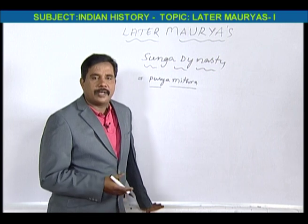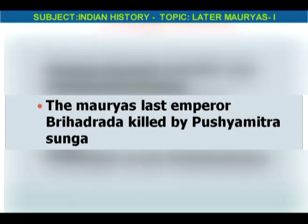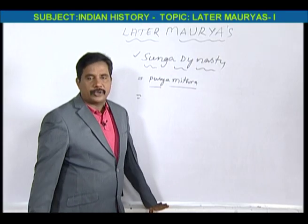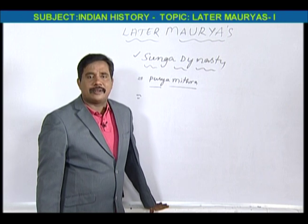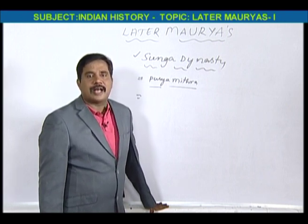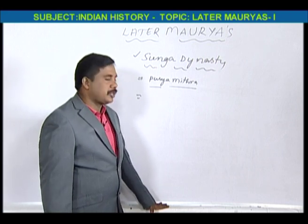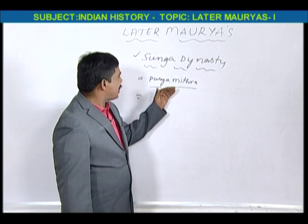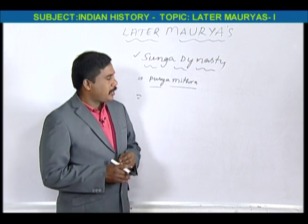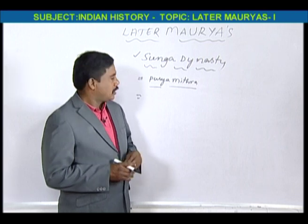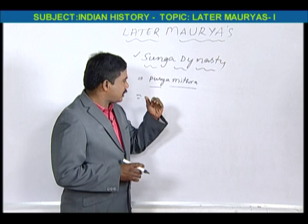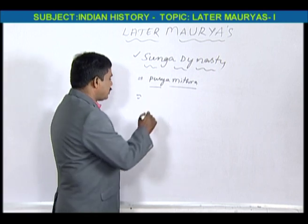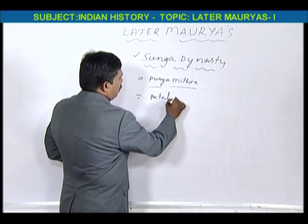We should remember that the Mauryas' last emperor, Bruhadrada, was killed by his army chief as well as minister, Pushyamitra Sunga. So Pushyamitra Sunga killed Bruhadrada and established the Sunga dynasty in North India. His capital was Pataliputram.